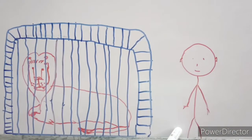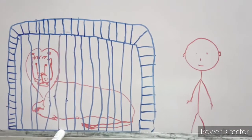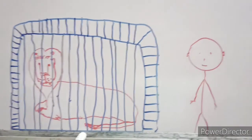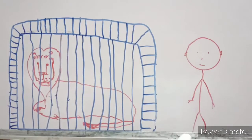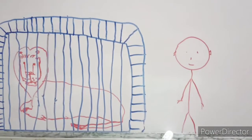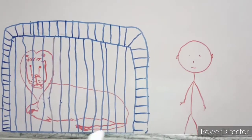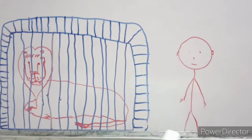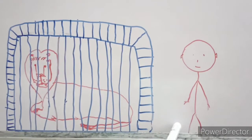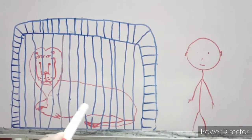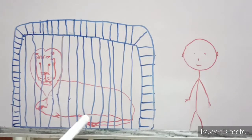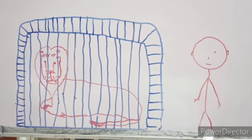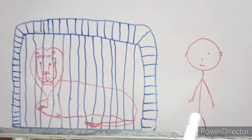See here, kids — you can see a man and a lion. The lion is inside the cage, and the man is standing outside the cage. So inside means inside the cage, outside means outside the cage. Understood? Yes!